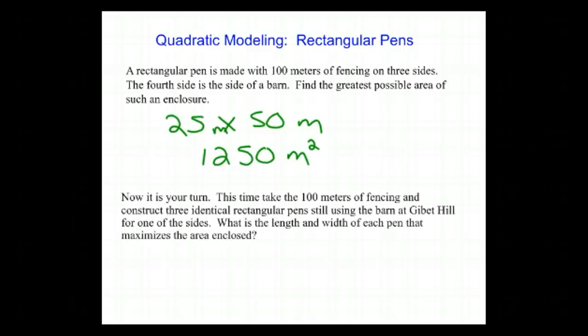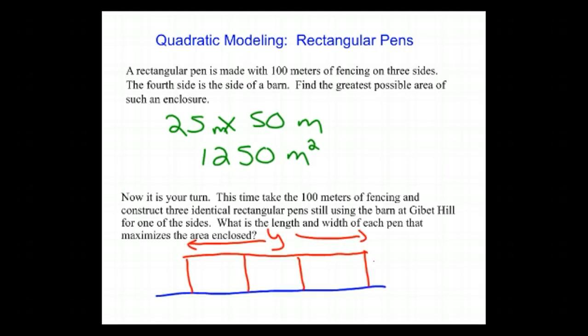Now it's your turn. Instead of making one pen, let's make three identical rectangular pens, still using the side of the barn at Gibbet Hill. If you pause, you won't get my hint. If you don't pause, I will show you. Here's the side of the barn. We need to put fencing and make three identical pens, rectangular. I'll call this whole long side y, and each of those individual sides x. That's all the hint I'm going to give you, though. You take care. Have fun. Ciao for now.